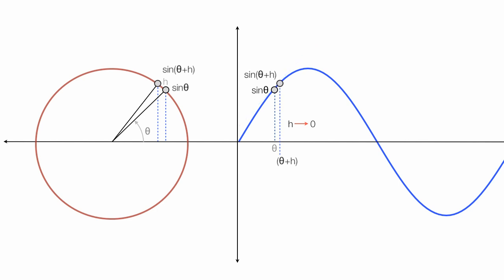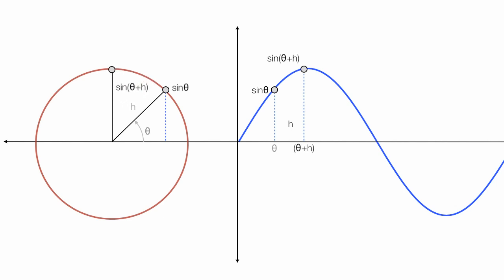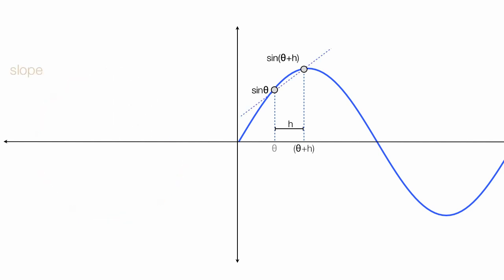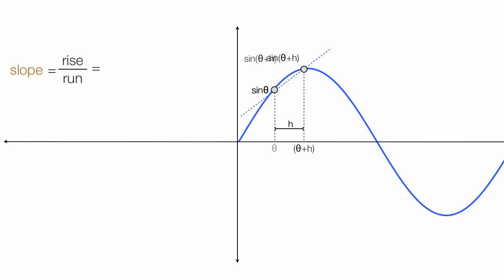I'm going to separate those two points to give myself some space to work. Again, I have theta and h as my two distances. I can calculate the slope of this line by doing the old-fashioned rise over run. The run distance is h. The rise distance is sine theta plus h minus sine theta, divided by the run, which is h.